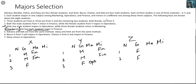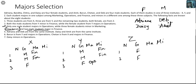Adriana and Deb are from the same institute. Daisy and Amit are from the same institute. Adriana and Daisy are females; Deb and Amit are males. Adriana is either in X or Y; Daisy is either in X or Y. So the two other females — Bandita and Chitra — are guaranteed to be in Z.